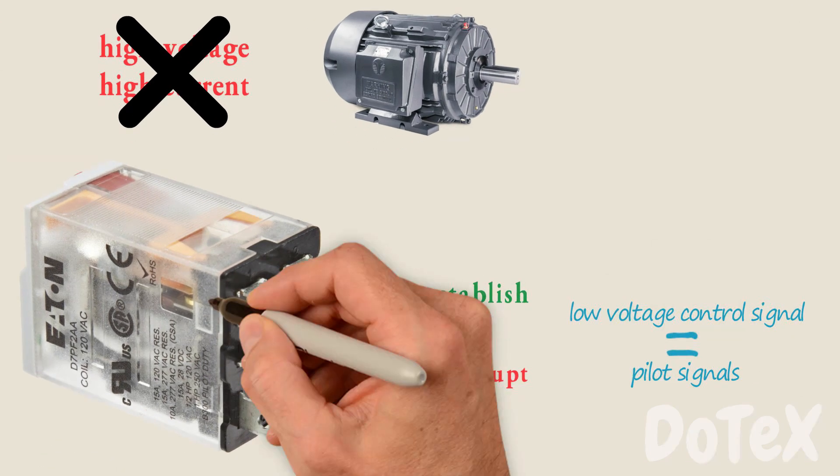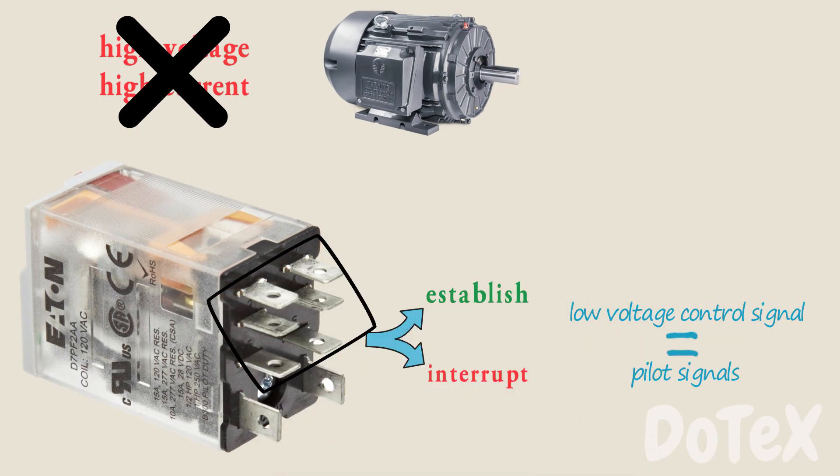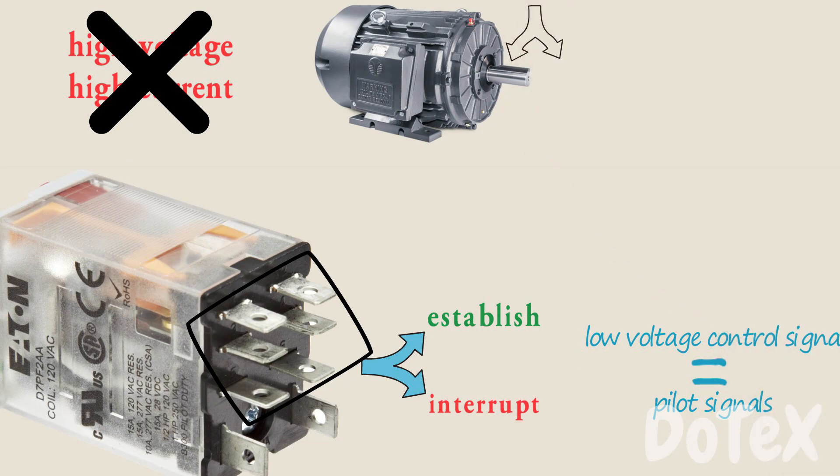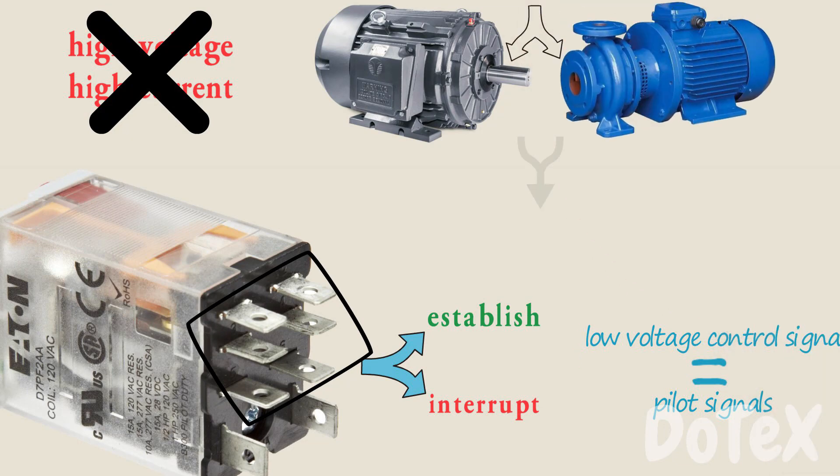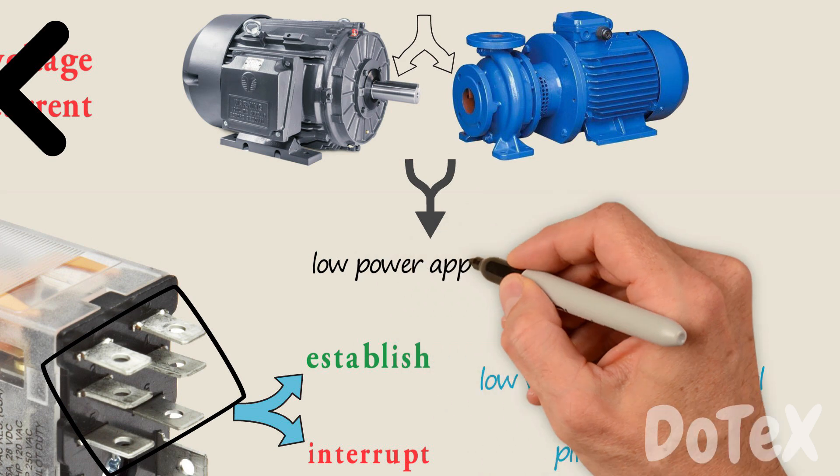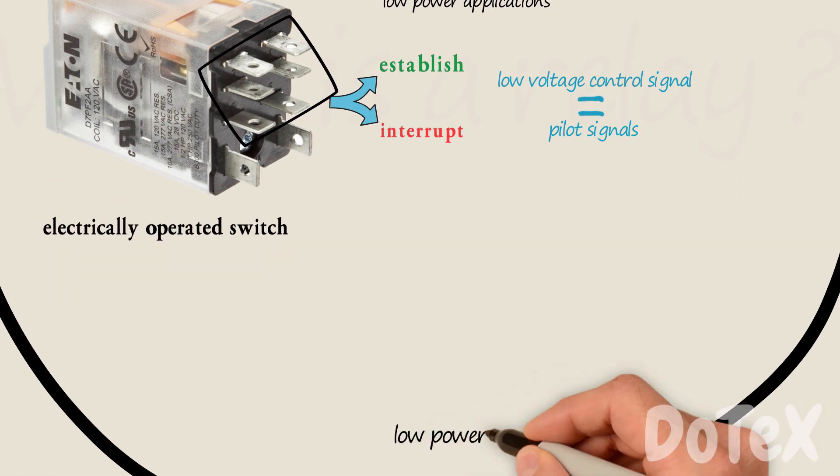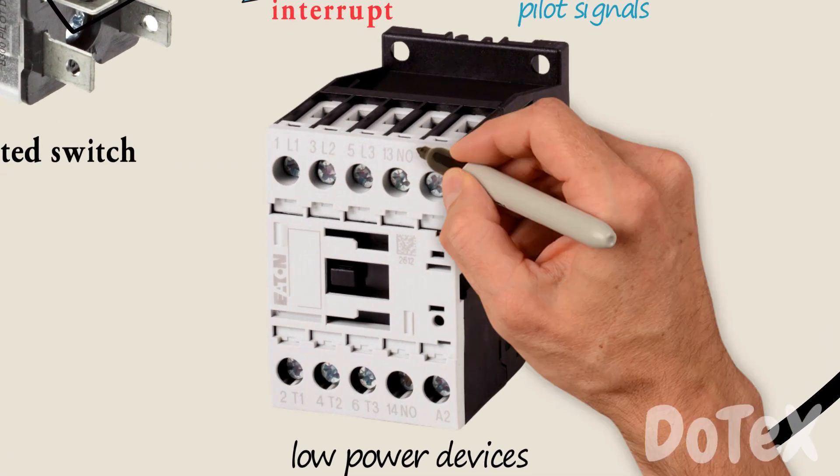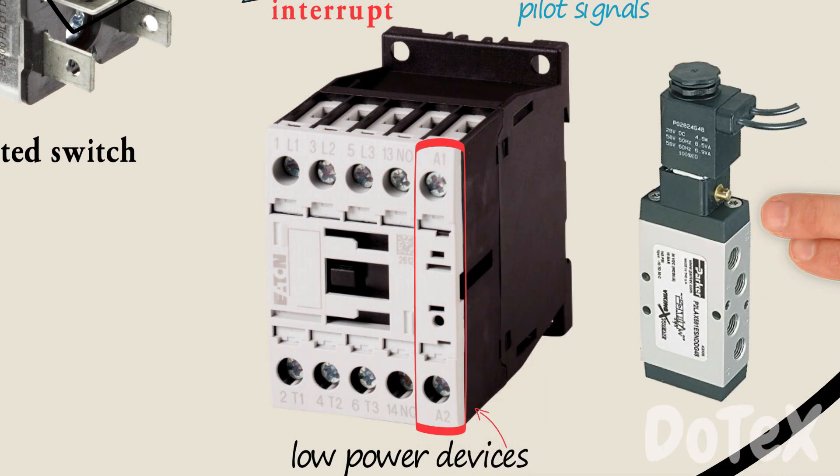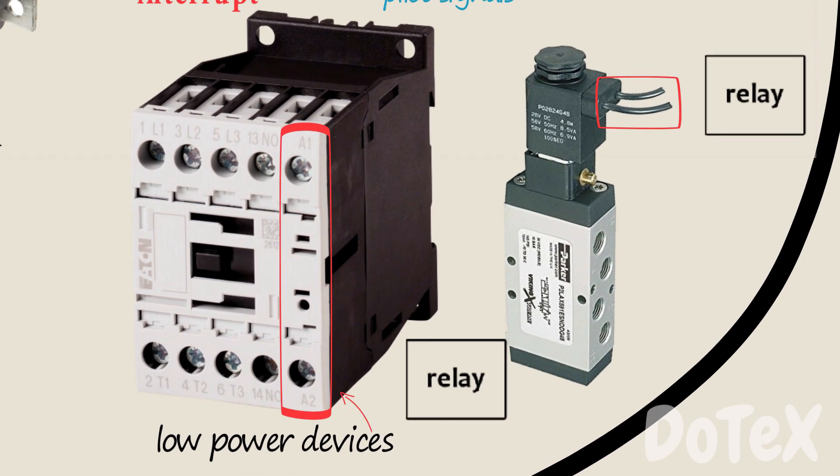Relay contacts rarely switch loads directly like motors or pumps and only do this in low power applications. Relays usually switch control signals, in other words low power signals, to other low power devices like the coils of contactors or the solenoids of hydraulic valves. Devices like contactors or solenoids, when ordered to work by the control signal, make the connection of heavy electrical or hydraulic power load.